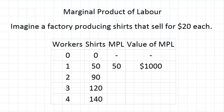From this point, if we then add one more worker going from one to two, we go from 50 shirts produced to 90 — an increase of 40 shirts. So we get a marginal productive labour of 40 with a value of $800.